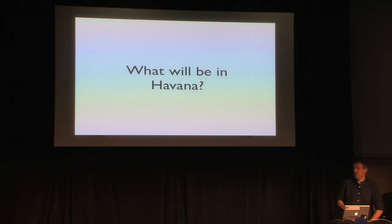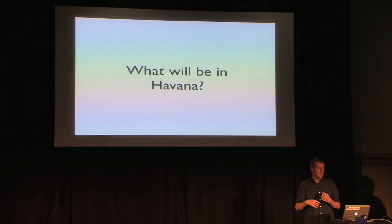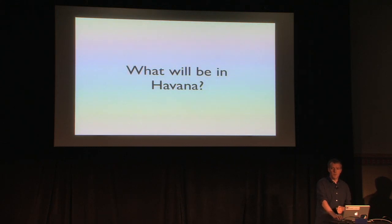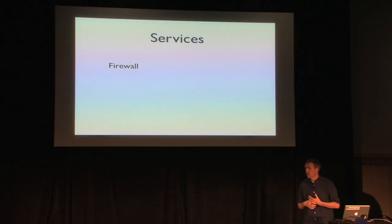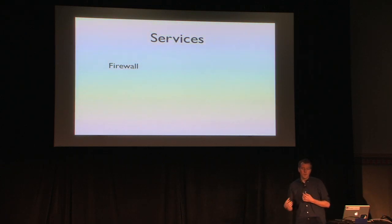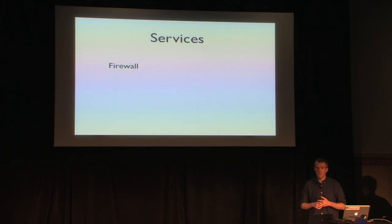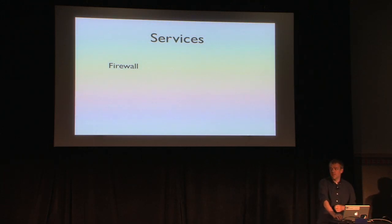So the real question is what's going to be in Havana? The Quantum team has been meeting for the last three days — I'm going to do a little bit of future prediction. The team's still working out some of the blueprints over the next two weeks or so. But there are a couple themes. Services was a really big theme — probably the biggest three were firewall, load balancing, and VPN. Firewall and security groups give you one level of protection and allow you to protect the host, but firewalls give you the ability to protect the network and apply filtering rules to network traffic. A group of community members came together and spent a lot of time before the summit hammering out what the model and APIs would look like.